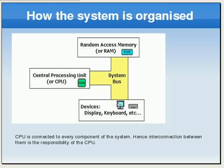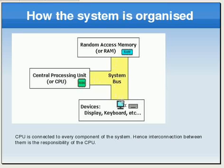One very important concept here: if you want to store content from RAM to the hard disk, data doesn't travel directly to the hard drive. The data from RAM travels first to the CPU, and then the CPU sends the data to the hard drive. Similarly, when you load a program, it is first loaded into the CPU and then the CPU loads it into RAM. There is no direct interconnection — that is the duty of the CPU.